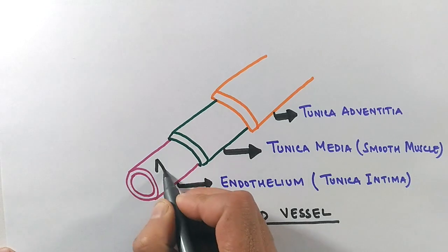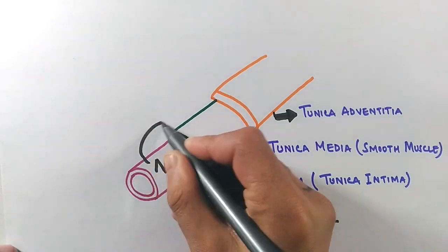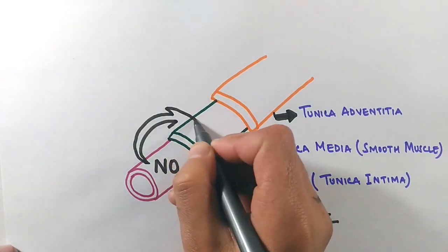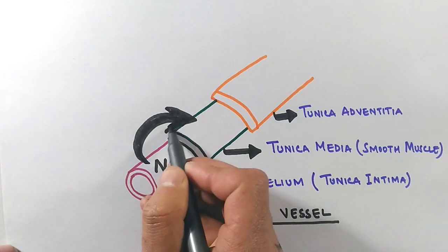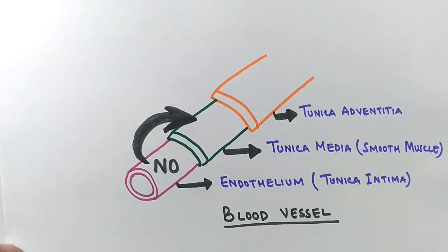If we see in the structure, it is the endothelium layer, the tunica intima, in which the nitric oxide is made by endothelial cells of the endothelium layer.